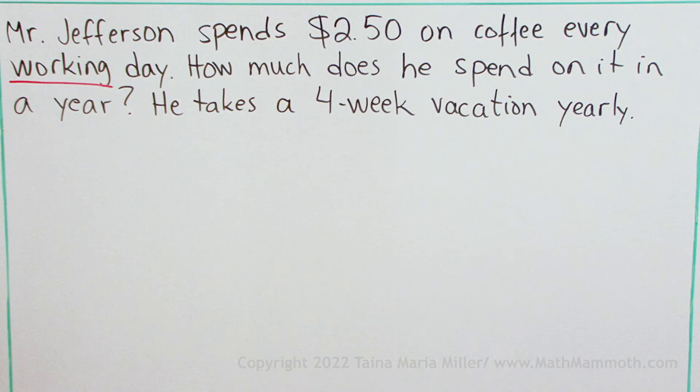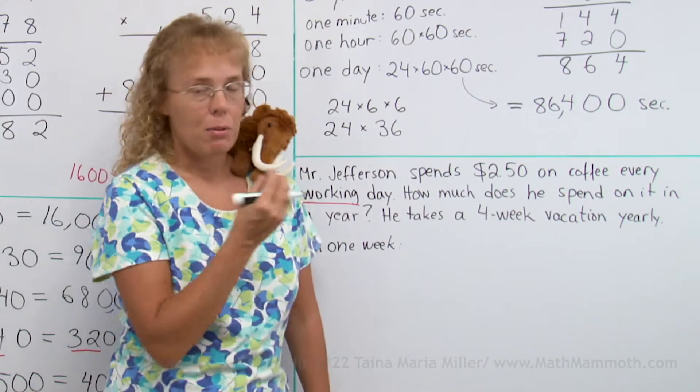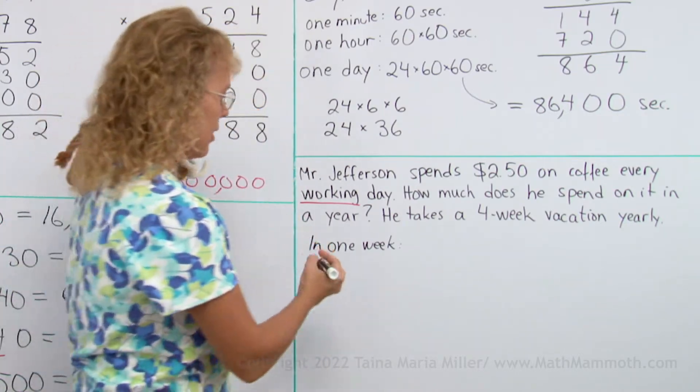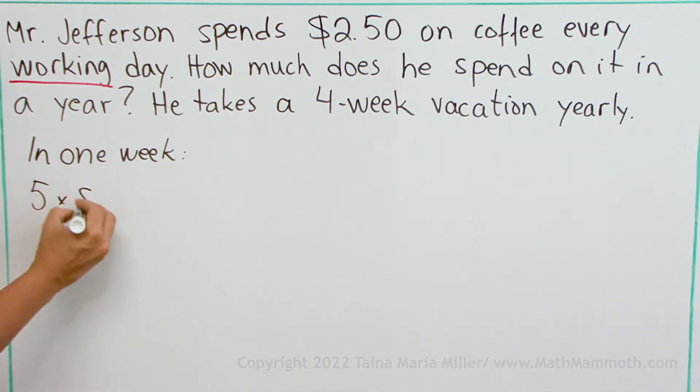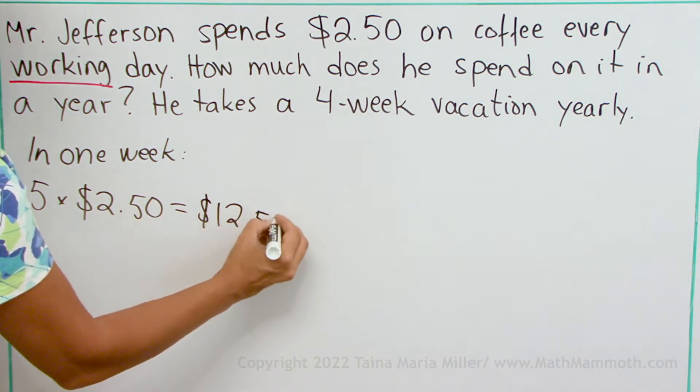Let's figure out how much he spends on it in a week. But this is a working week, five days, so it is five times $2.50. That's pretty easy because four times $2.50 would be $10. So this is $12.50.